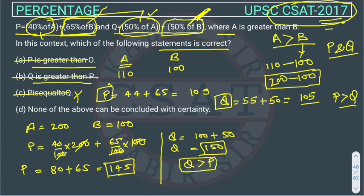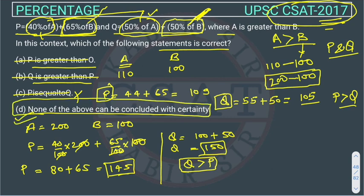This is also we can cancel. None of the above can be concluded with certainty. This is our answer. Because in one case we are getting P is greater than Q. In the other case, we are getting Q is greater than P.